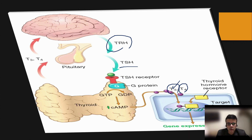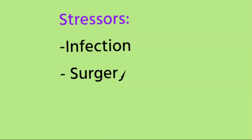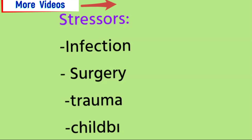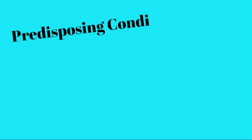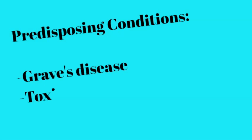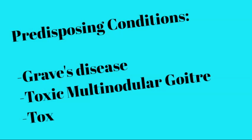The common clinical conditions associated with thyroid storms include various infections, surgical conditions, post-surgical conditions, trauma, and childbirth. The important predisposing conditions that can lead to thyroid storm are Graves' disease, toxic multinodular goiter, and follicular adenomas with toxicity or increased synthesis of thyroid hormone.